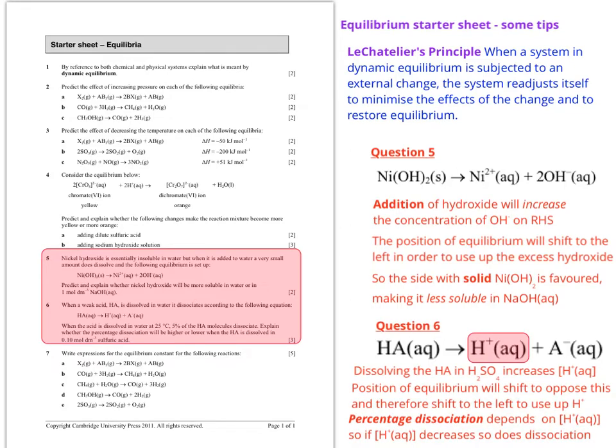The position of equilibrium will shift to oppose this and therefore shift to the left to use up the H plus. Therefore because percentage of dissociation depends on the hydrogen ion concentration, if hydrogen ion concentration decreases then so does the dissociation.